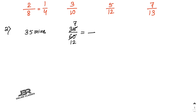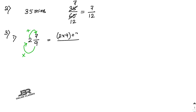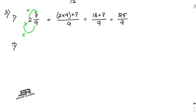Number 3: convert the following fractions into improper fractions. The first one is 2 whole 7 by 9. To convert a mixed fraction to an improper fraction, multiply the denominator by the whole number and add the numerator. So 2 into 9 is 18, plus 7 equals 25. The answer is 25 by 9.